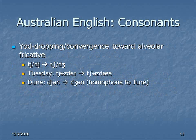Australian English in both the general and broad accents tends to engage not only in yod dropping — that is, dropping the /j/ sound in words like TUESDAY or DUNE and pronouncing the vowel simply as a pure vowel, TUESDAY, DUNE — but also to have the preceding consonant, either a voiced or unvoiced alveolar plosive, glide into a fricative. So rather than TUESDAY or TYUESDAY, it would be CHEWSDAY.